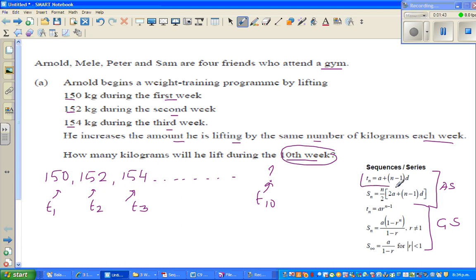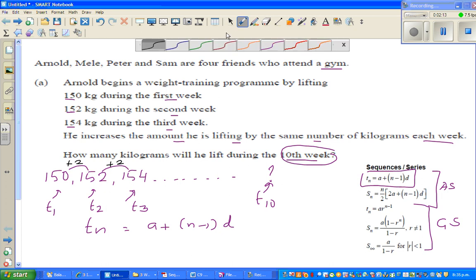We got a formula of tn. The formula is tn equals a plus n minus 1 times d. This is called an arithmetic sequence because it's increasing by the same amount. This is plus 2, plus 2. This is called the common difference.